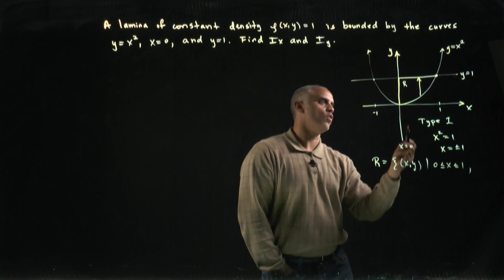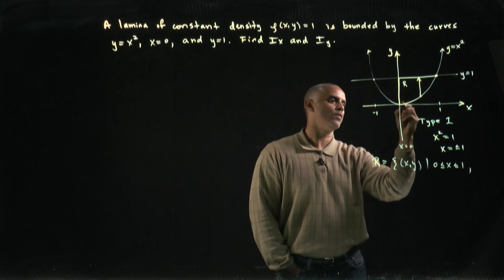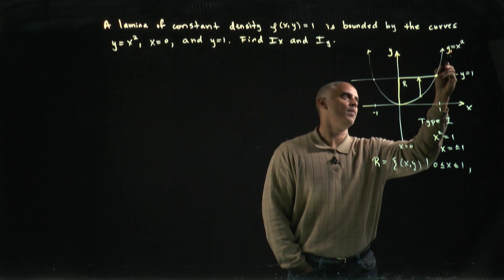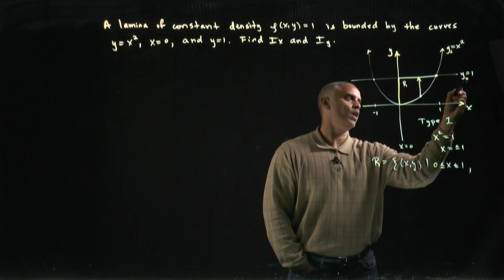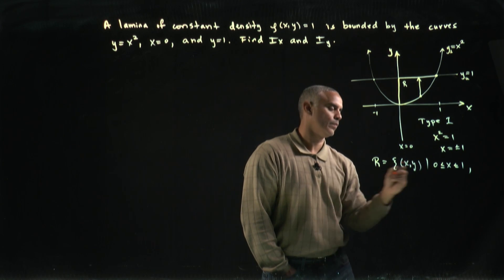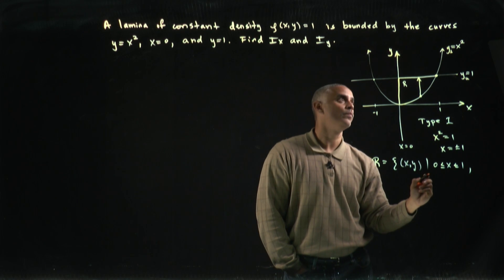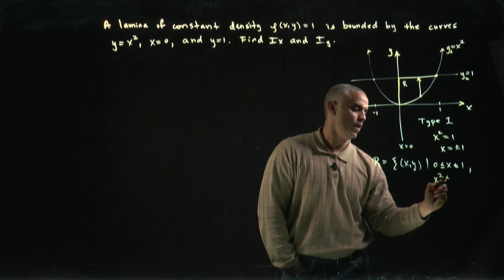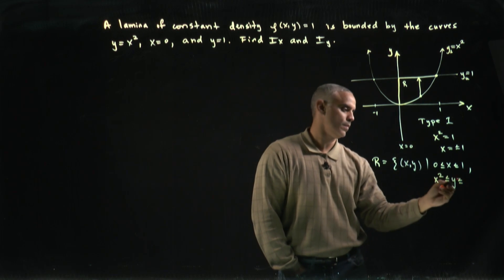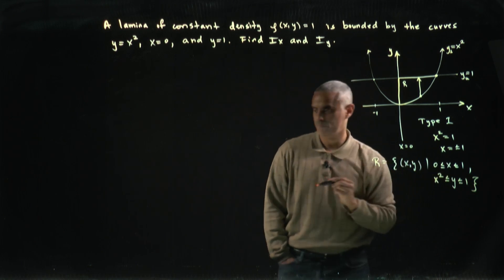My y will go from a lower bounding function of x squared, so it'll ride along the x squared, my lower bounding function, to an upper bounding function, y equals 1. So my y lower is going to be x squared, and my y upper is going to be 1.